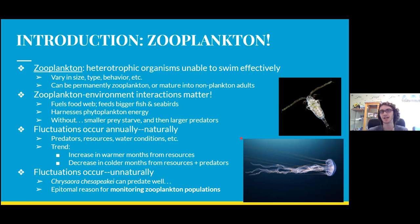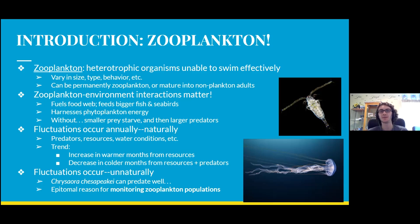Sea nettles do not have many natural predators, so they are often not stopped when they grow to great numbers. In recent years their numbers have increased considerably. One theory is that declining water quality means their prey cannot swim away as effectively because they are not as healthy, allowing sea nettles to thrive and catch prey more easily. An organism like this is a primary reason scientists have begun monitoring zooplankton populations — to see how both prey and predator populations are doing.